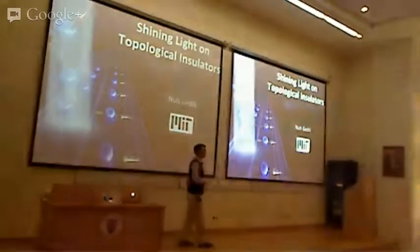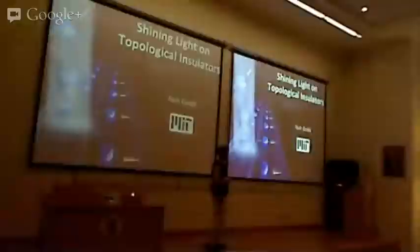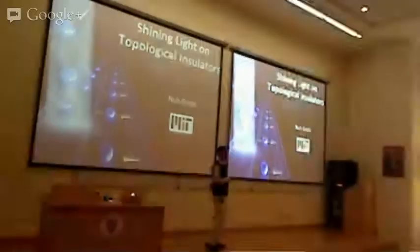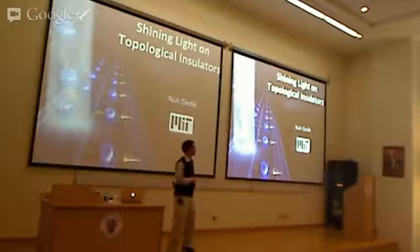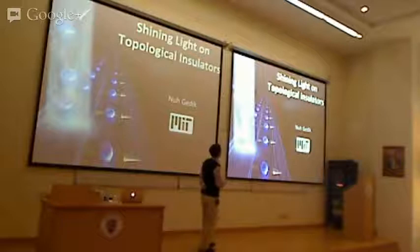This picture illustrates the following: there are two electron species, one spin up and one spin down, going in opposite directions. In topological insulators, the motion of the electron is coupled to the spin. By using light pulses, you can couple these electrons in a specially different way.